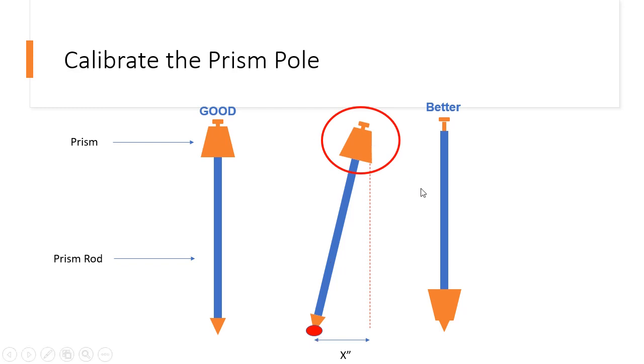And for the simple reason that even if it's slightly out of level to the left or to the right, the point you're staked on might be down here, but the tool is reading the actual prism. And you can see here that if that's not level, it's going to be causing some sort of deviation with the actual point you're trying to measure, which will make you inaccurate.